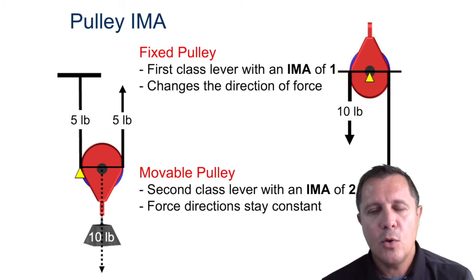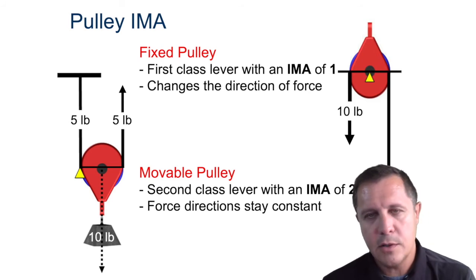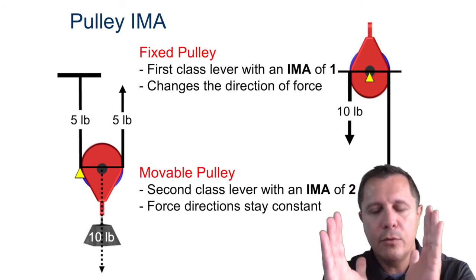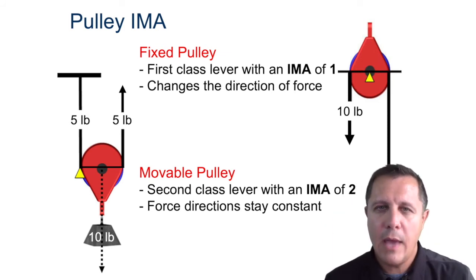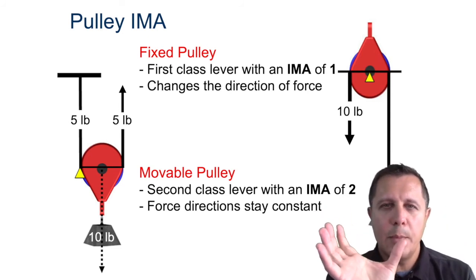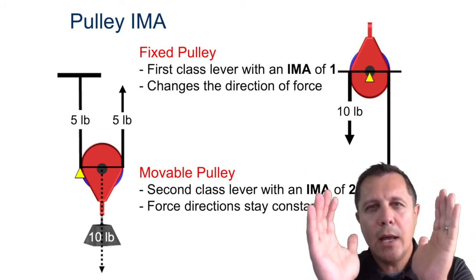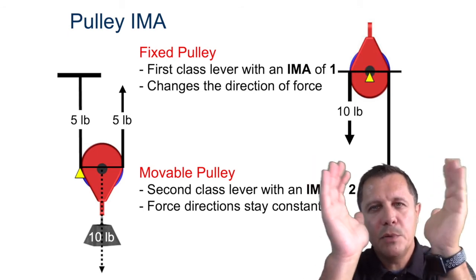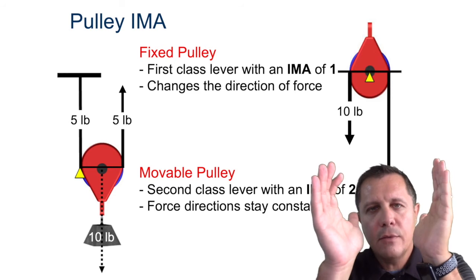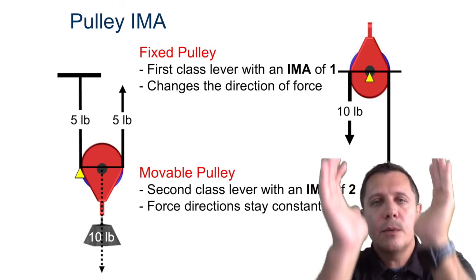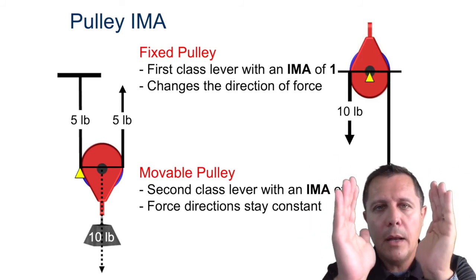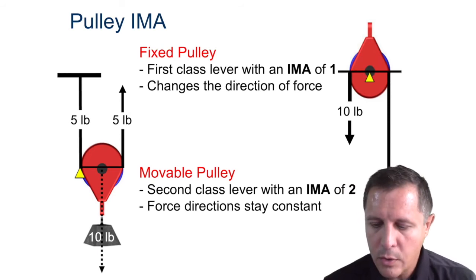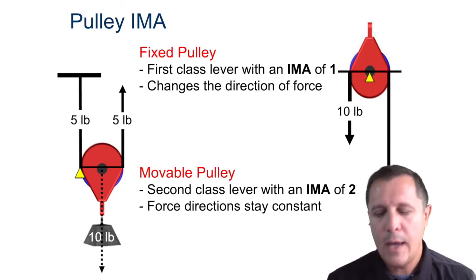With a movable pulley, it's one rope but it splits the force into two strands. If I have to lift up a 10-pound weight and I have two strands of that rope, it can split the load. Think of strands as hands — if one hand holds something up, you need 10 pounds; but with two hands you split that 10-pound weight into five and five. So it only takes five pounds to lift that 10-pound weight.